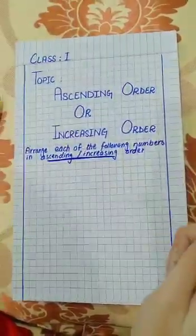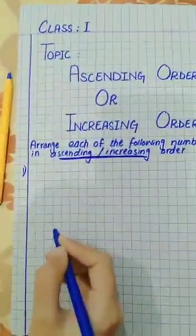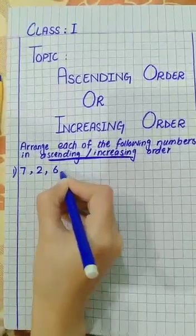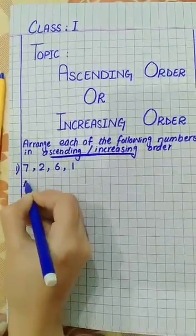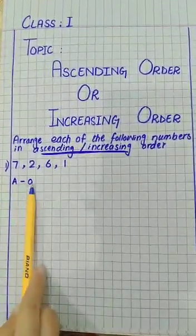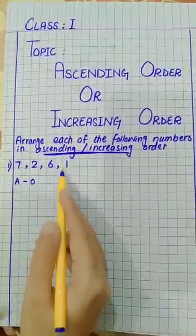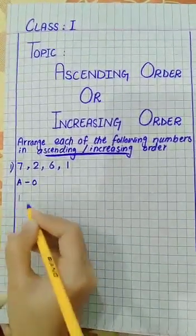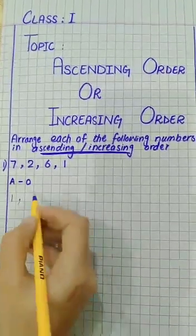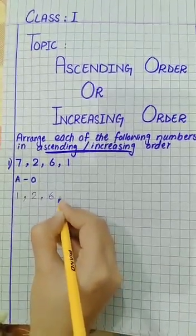We have 7, 2, 6, 1 in ascending order. A.O. means ascending order — from the smallest to the greatest. What is the smallest number here? One. Excellent! What's after one? The smallest remaining is two, then six, and the last number is seven. So the answer is 1, 2, 6, 7.